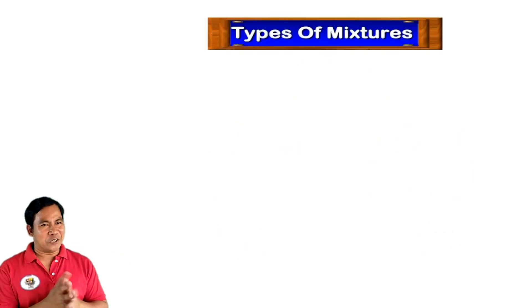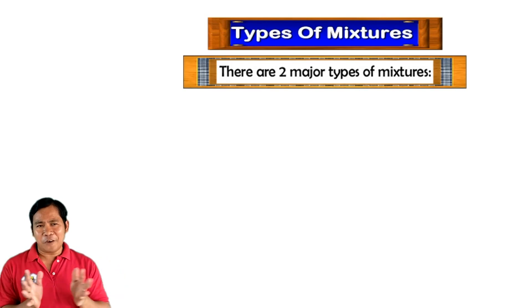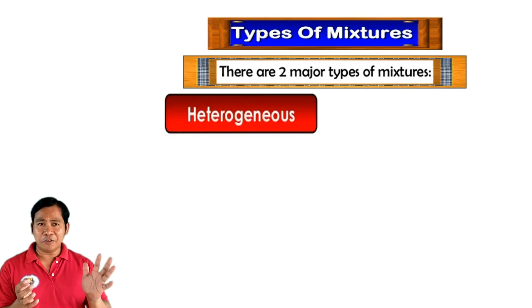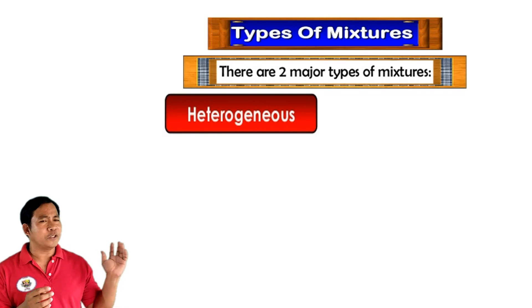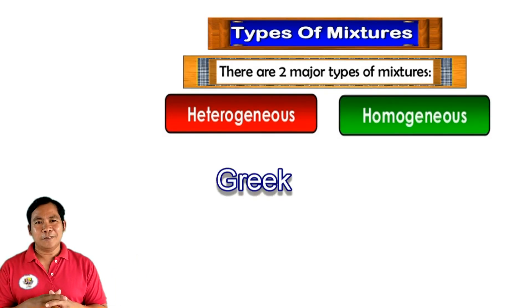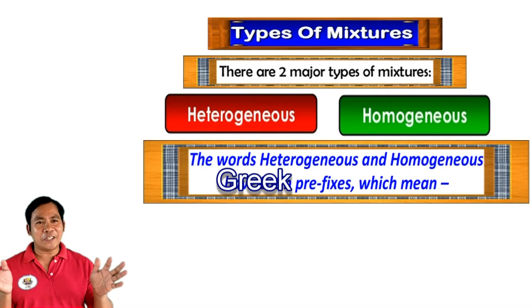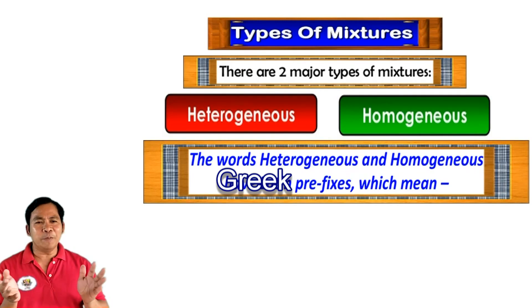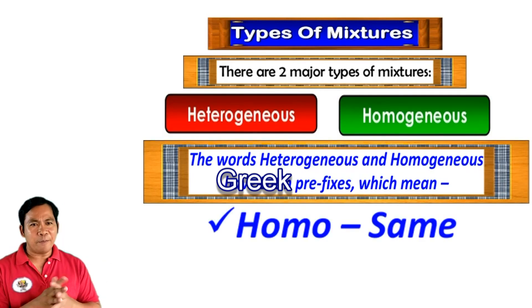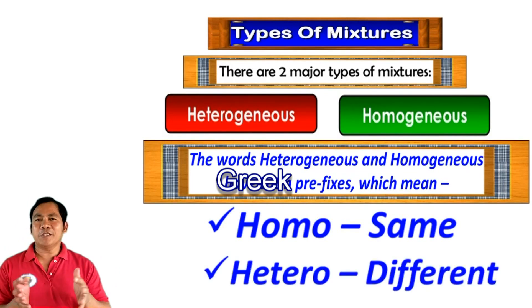Types of mixtures: There are two different types of mixtures, heterogeneous and homogeneous. The words heterogeneous and homogeneous have prefixes which mean homo means the same and hetero means different.